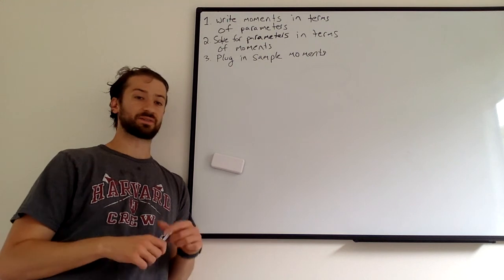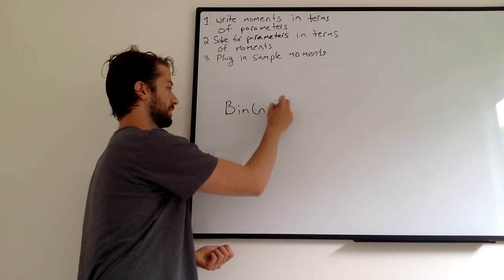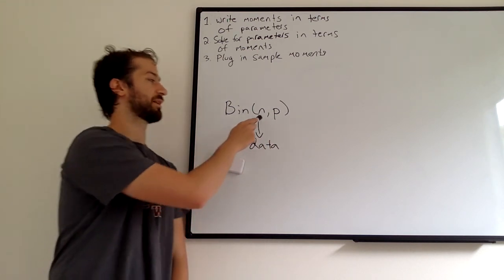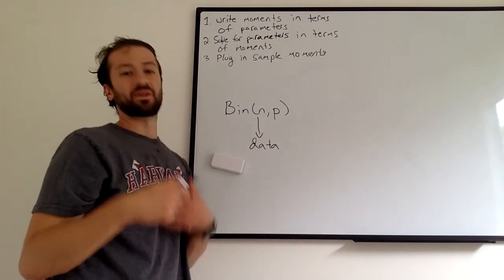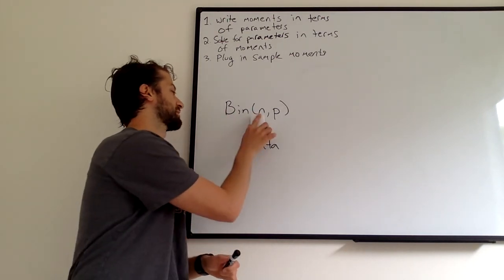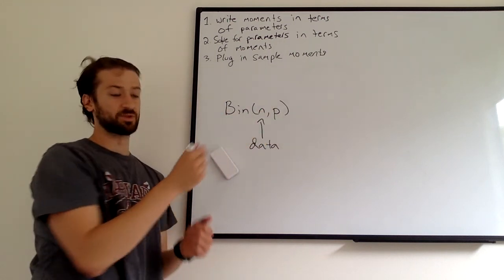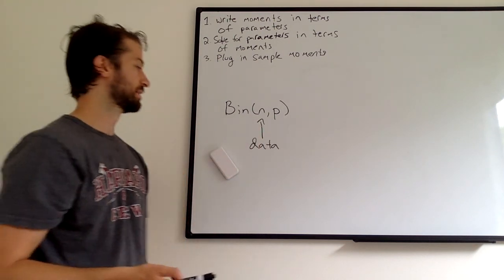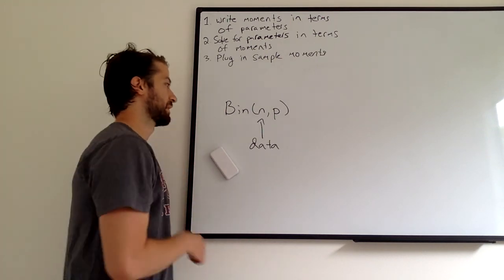In probability, you have some random variable — let's say P — and you basically take this as given and try to figure out the probabilities of observing different types of data: how many successes in trials, what's the probability of this or that. Inference reverses the direction: we observe some data and we don't take the distributions as given. We maybe kind of know the distribution, but we don't know the parameters, and we try to infer what the parameters are — given the data, what is the underlying N, what is the underlying P.